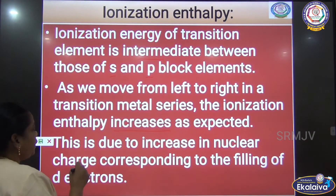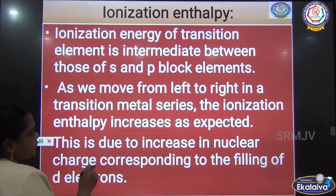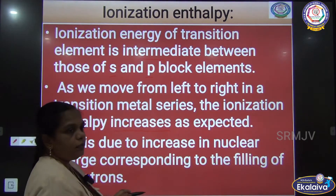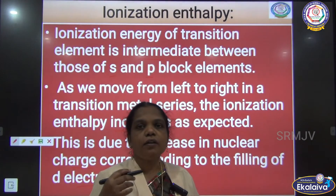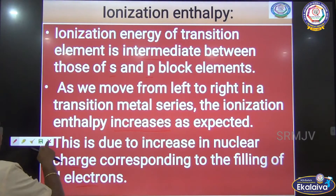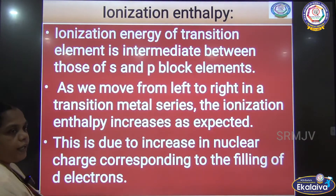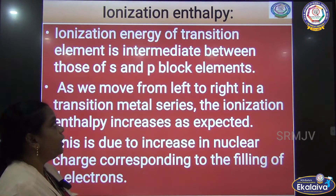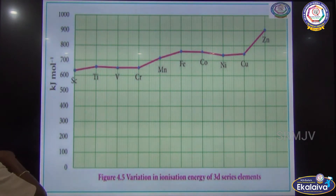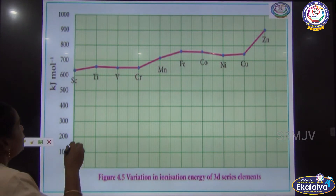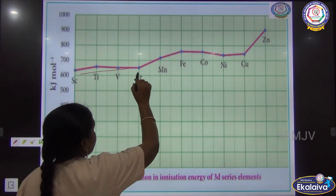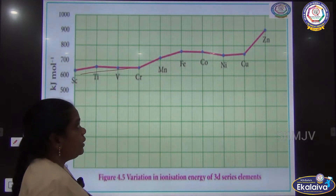This is due to the increase in nuclear charge and the corresponding filling of electrons, because new electrons are added to the same energy level. Because of this reason, the ionization energy is increasing. However, even though there is a steady increase in ionization energy, from scandium to chromium you can see a steady increase.